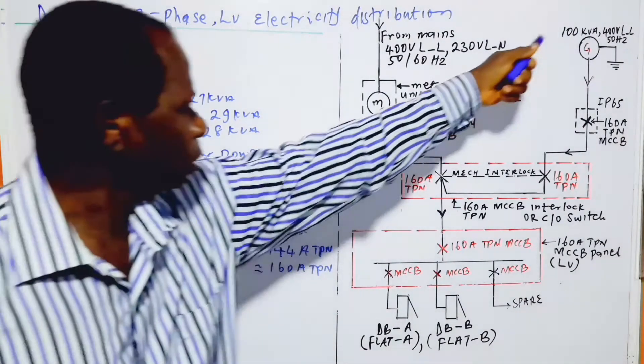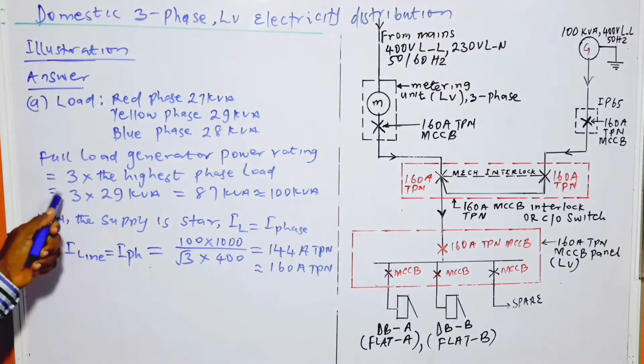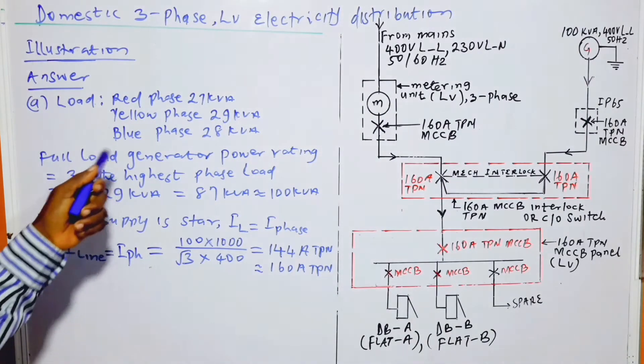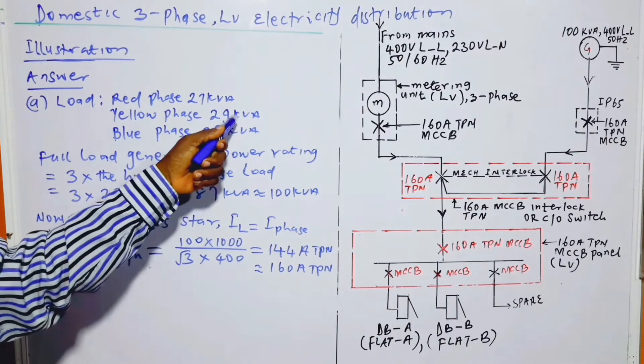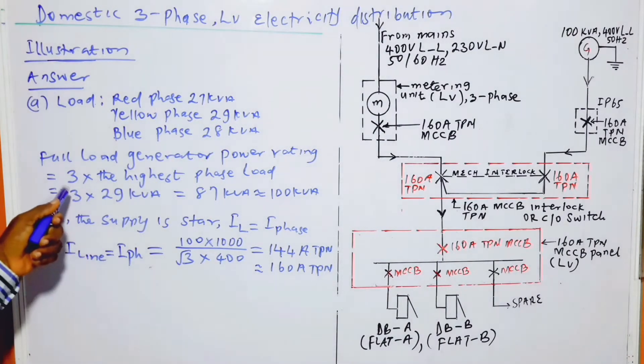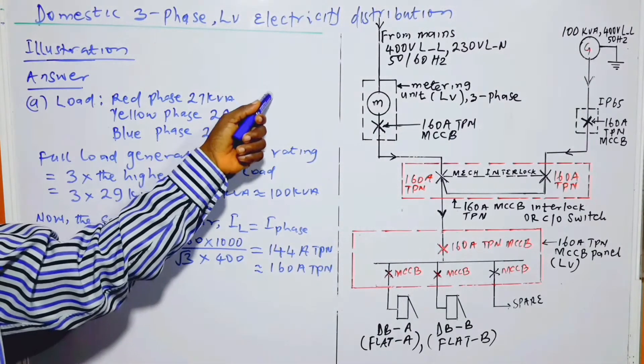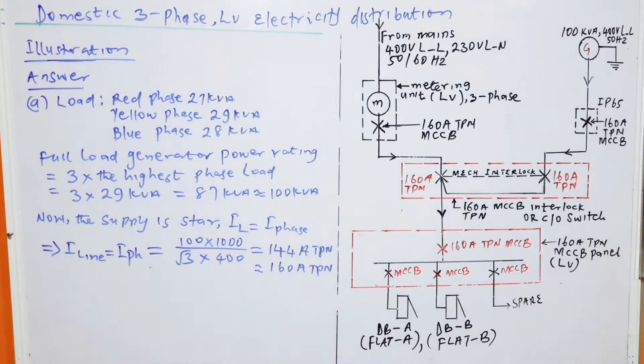You have to multiply the highest phase load, which is 29, by 3. If you take the algebraic sum of the phase loads, it will be incorrect, just as I explained in one of my videos regarding the sizing of transformers.